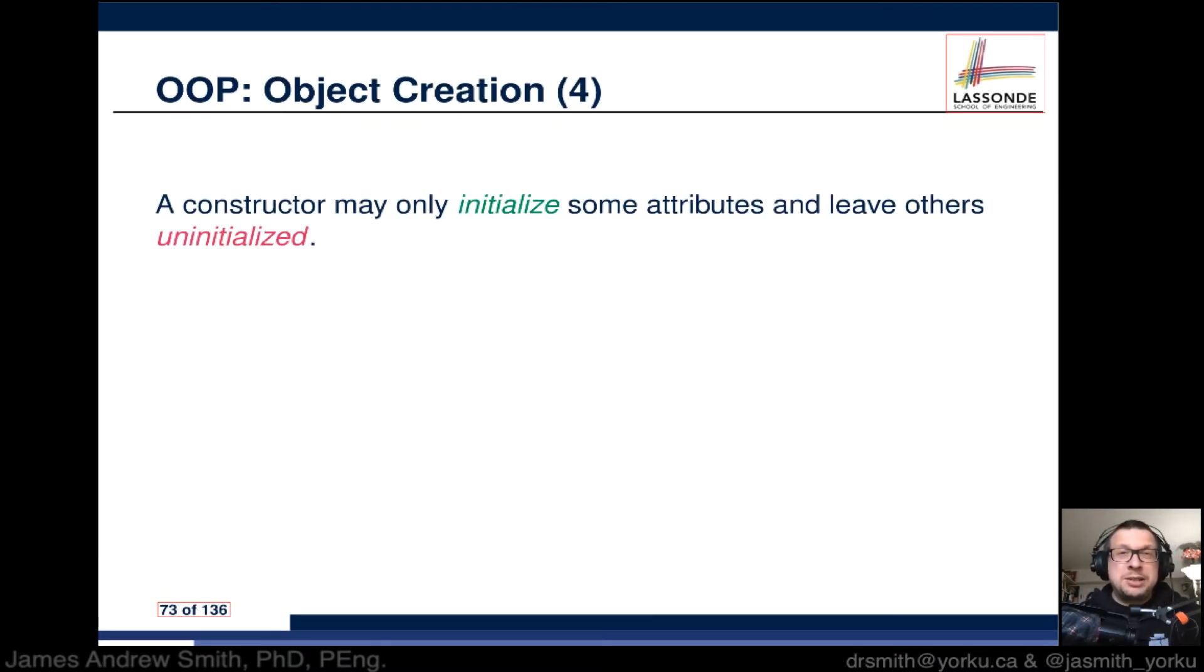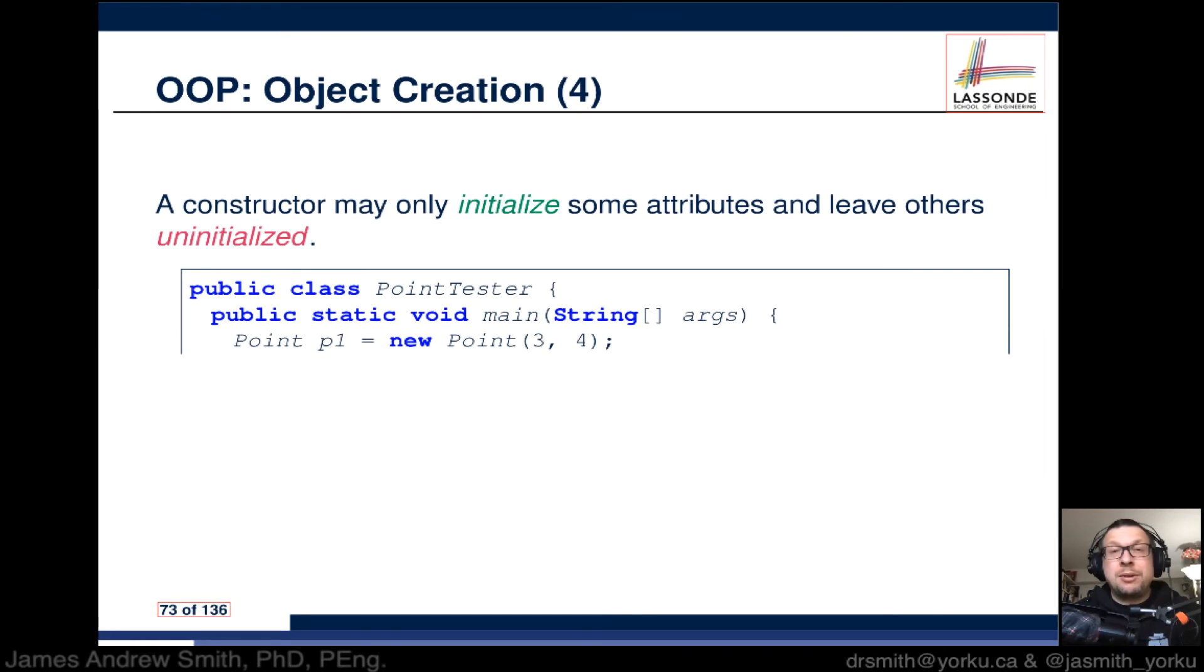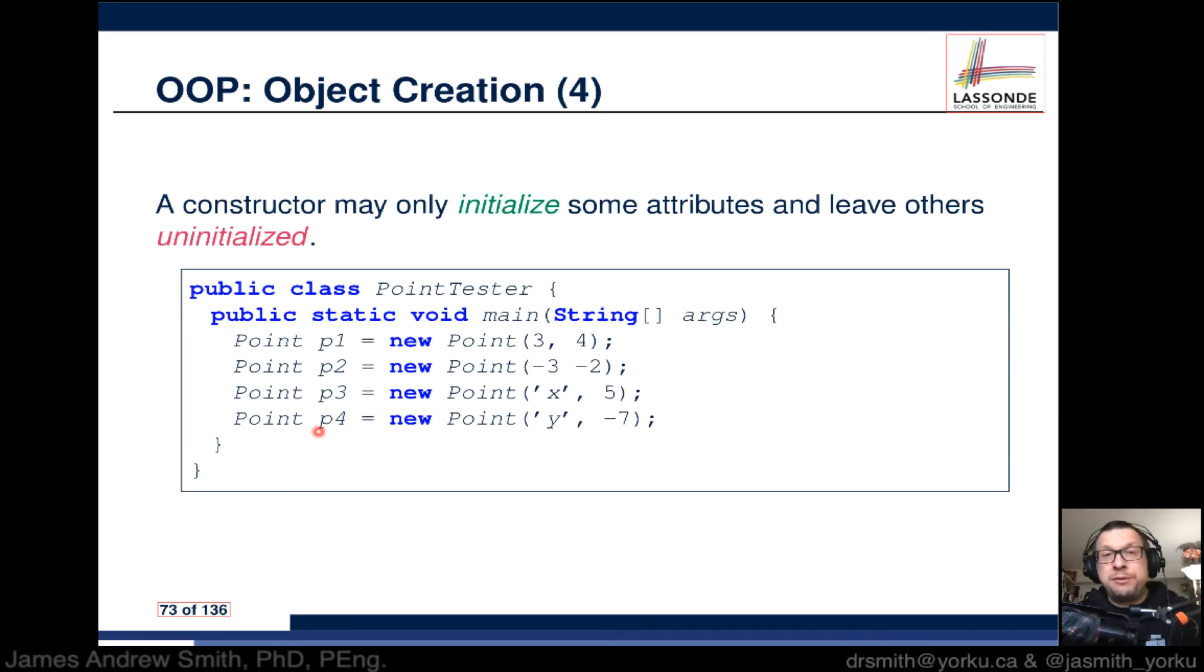So a constructor may only initialize sometimes—we'll initialize some attributes and leave others uninitialized. We can see this again right here. Point p1 is an object with 3 and 4—x is 3 and y is 4. Point p2, same thing—there should have been a comma right there—we would have had negative 3 and negative 2 as initial values initialized. Point p3, on the other hand, we're not initializing y. We're saying that we want to initialize x to a value of 5 but we're going to go with default values for y. With Point p4, we say that we don't want to specify what x is but we're going to specify what y is with an initial value of negative 7.